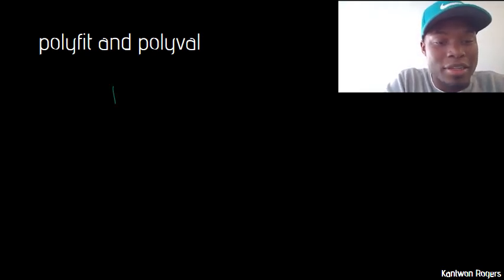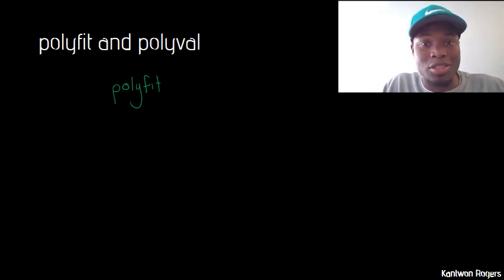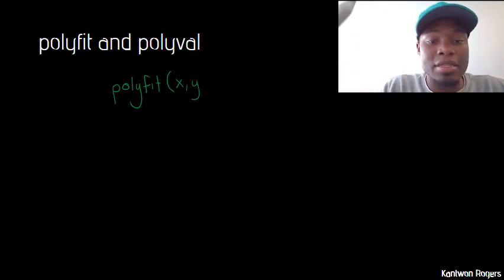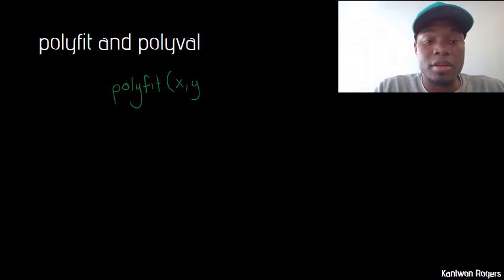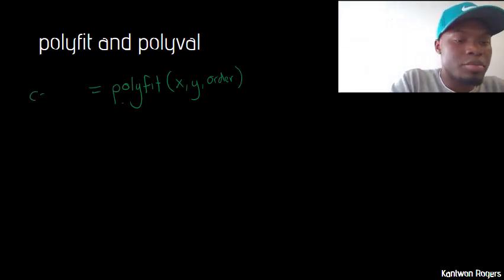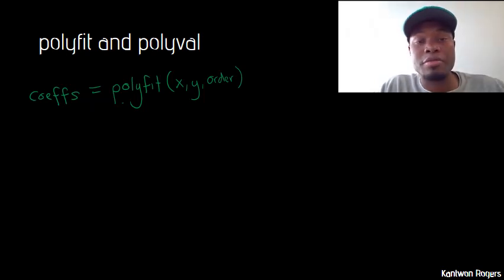So polyfit — the purpose of polyfit is it fits a polynomial to your data. The name of the function helps you remember what it's supposed to do. In order to fit a polynomial to your data, the first two inputs are your x and y values of your data, and then lastly is the order of the polynomial that you want to fit — first order, second order, third order, and so on. What polyfit outputs is what we call a coefficient vector, abbreviated as COEFS. This coefficient vector is a vector of numbers that represents a polynomial.